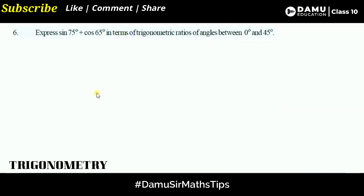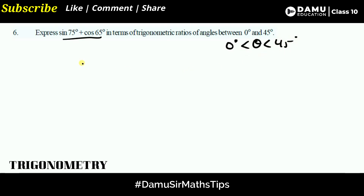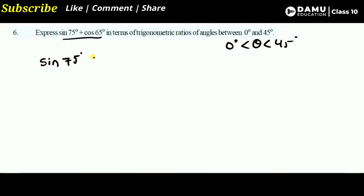Hello friends, in this question we are going to solve our sixth one: express sin75° plus cos65° in terms of trigonometric ratios of angles between 0 and 45 degrees. So the range is 0 to 45 degrees, meaning theta should be between 0 and 45 degrees.